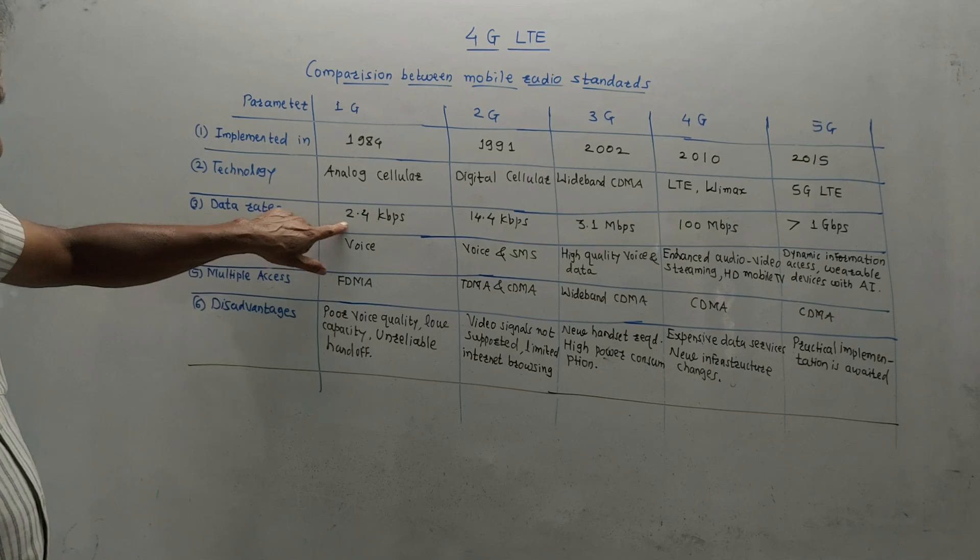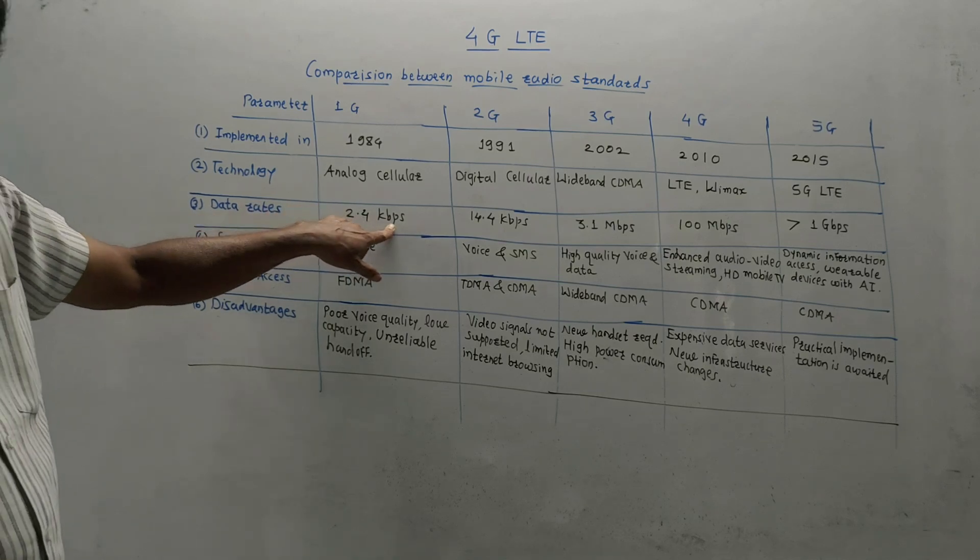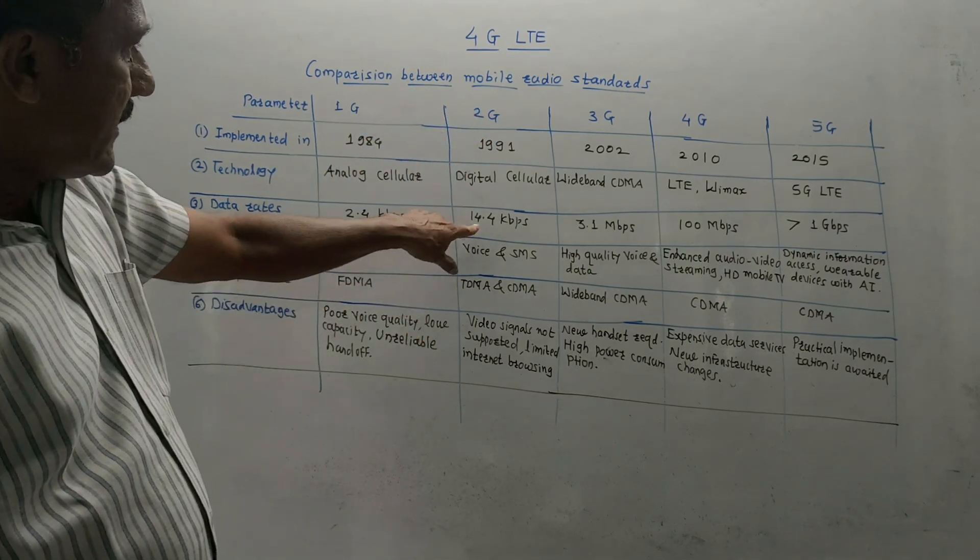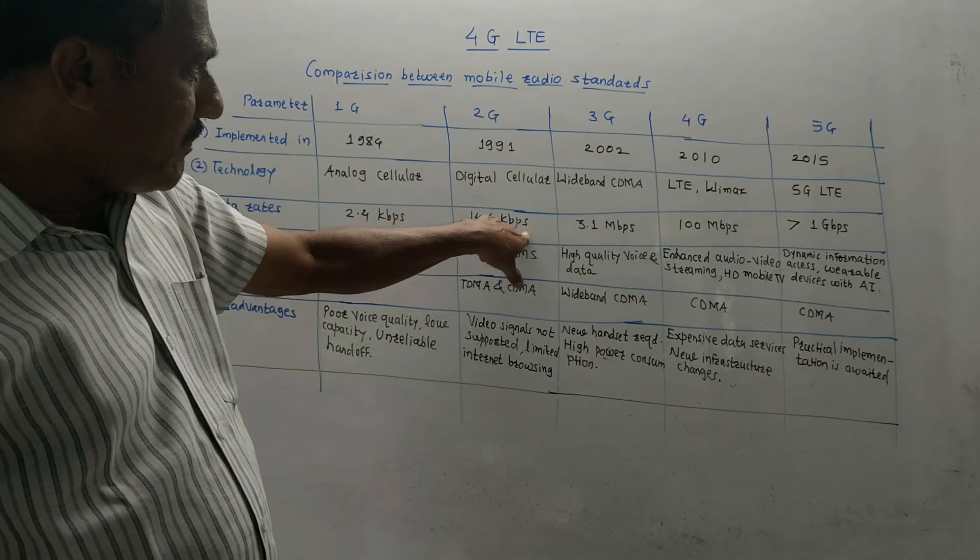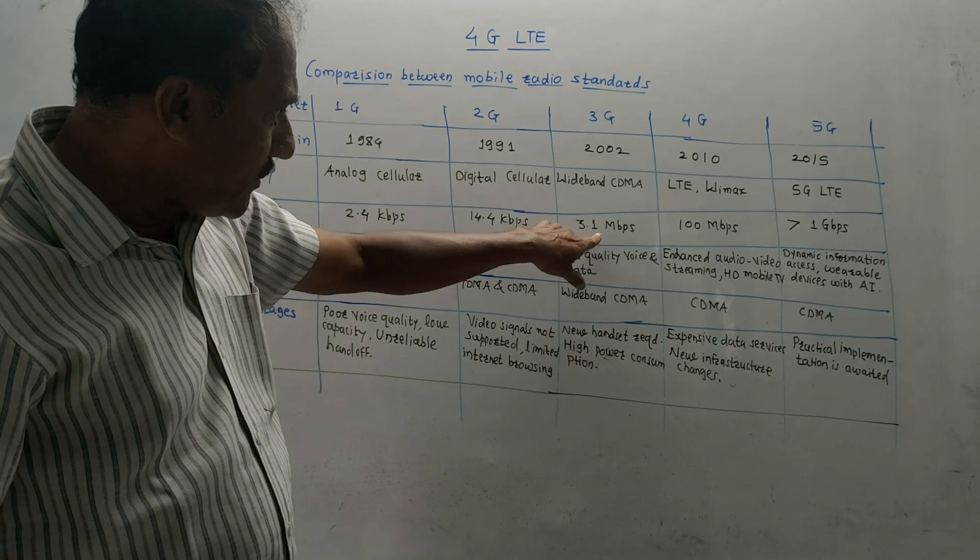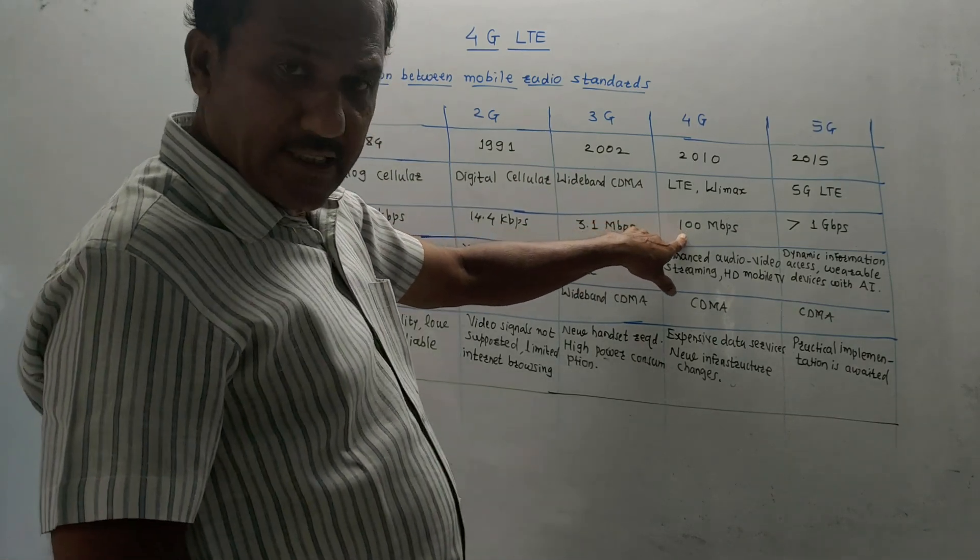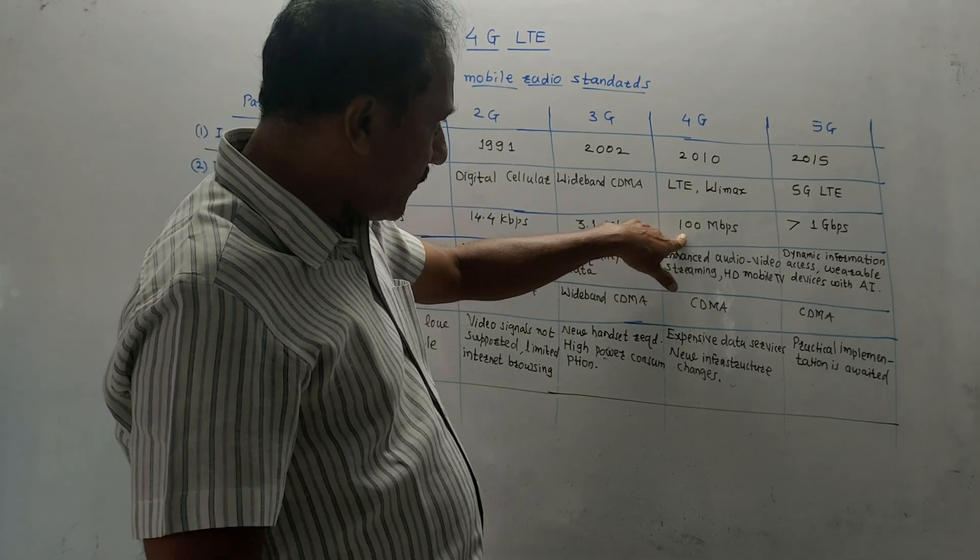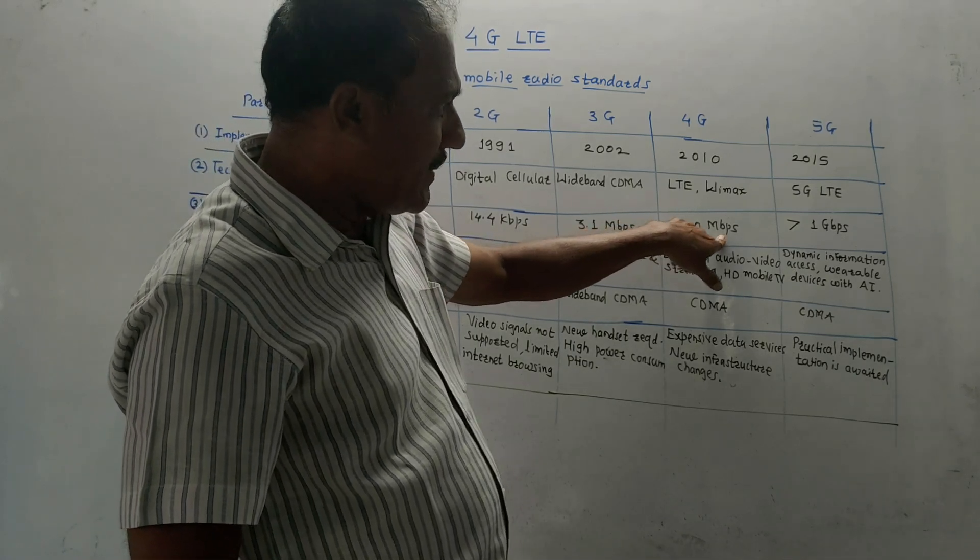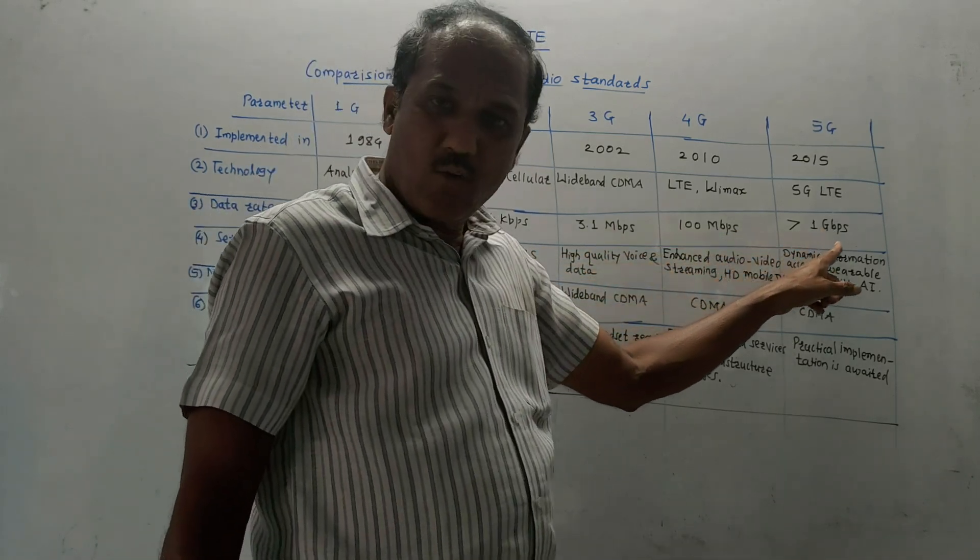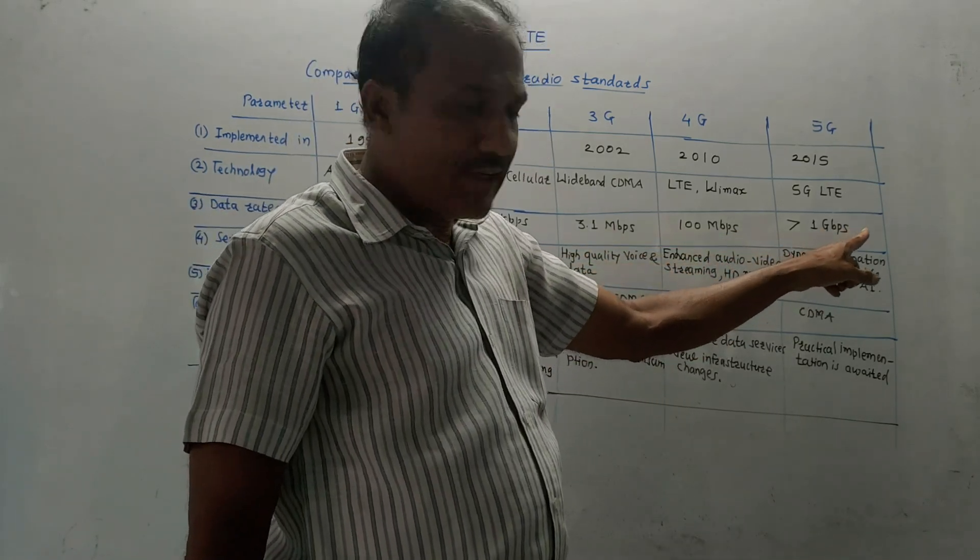Data rates: this is an important parameter. For first generation it was 2.4 kbps, which was very low compared to today's data rate. Second generation: 14.4 kbps. Third generation: it improved a lot to 3.1 megabits per second. Fourth generation: again there was a lot of increment, 100 Mbps. Fifth generation: we expect it should be greater than 1 gigabits per second.